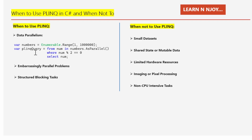Scenario one: data parallelism. Here I have written a query: `numbers = Enumerable.Range(1, 1000000)`, then `from num in numbers.AsParallel() where num % 2 == 0 select num`. This parallel query filters even numbers from a range of integers from one to one million. Use PLINQ when you need to perform the same operation on multiple data elements simultaneously, such as filtering, mapping, or aggregating data from a collection.